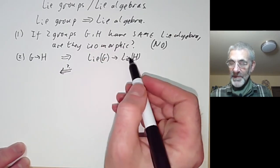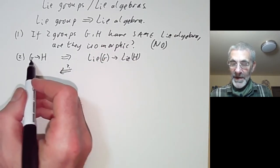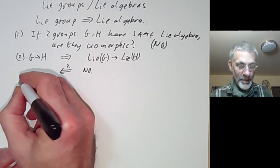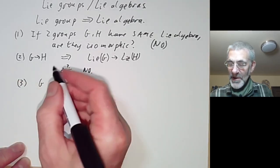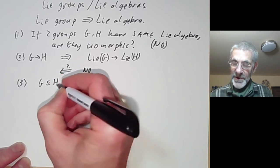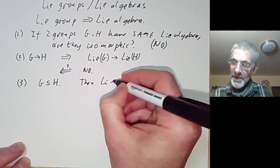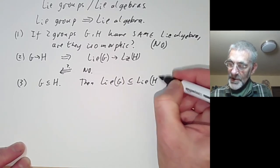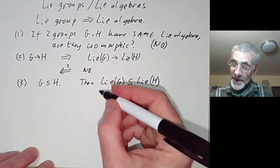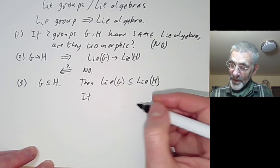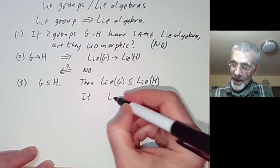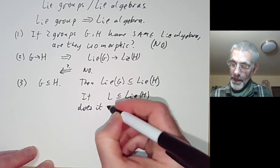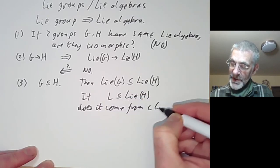If we've got a homomorphism between Lie algebras of Lie groups, does this give us a homomorphism between the Lie groups? And the answer is, in general, no. Or, a special case of this: suppose G is a subgroup of H. Then the Lie algebra of G is a subalgebra of the Lie algebra of H. And we can ask, is the converse true? If we have a Lie algebra contained in the Lie algebra of H, does it come from some closed subgroup?